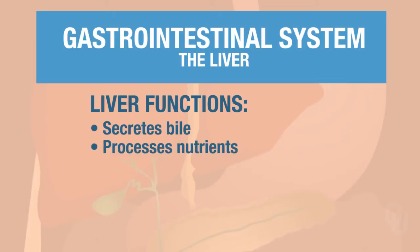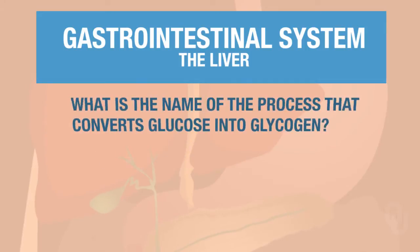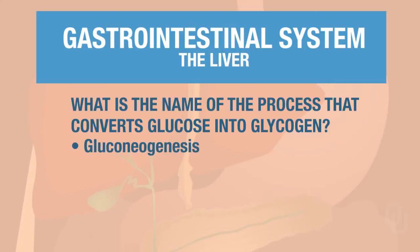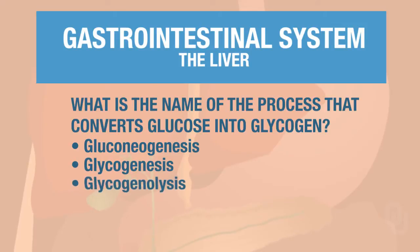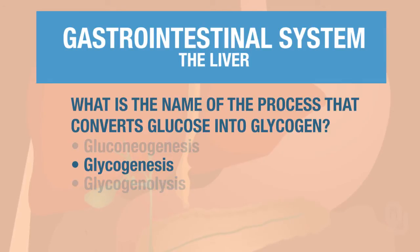The liver does a lot of nutrient processing. It can take glucose and turn it into glycogen. Do you recall the name of the process that converts glucose into glycogen? Would it be gluconeogenesis, glycogenesis, or glycogenolysis? If you're taking glucose and forming glycogen, that's called glycogenesis.